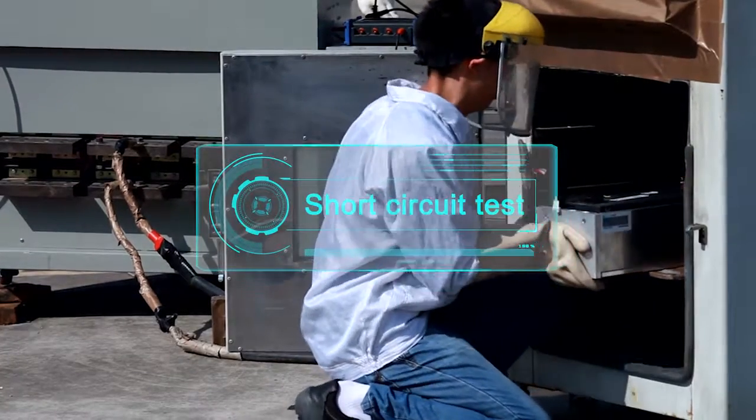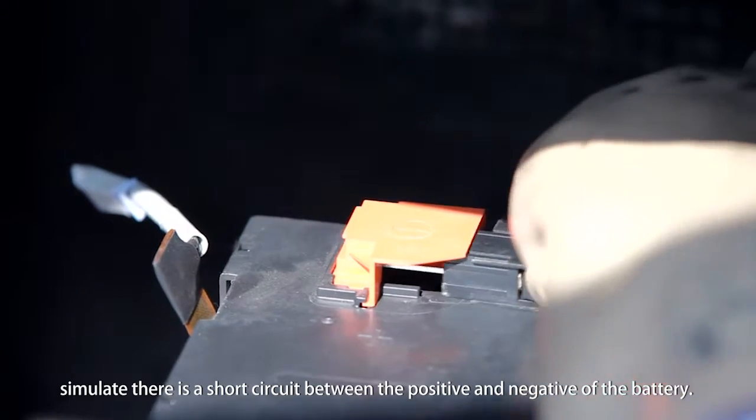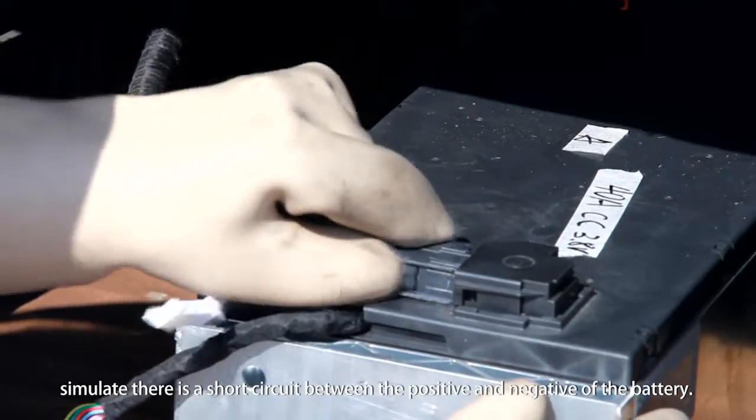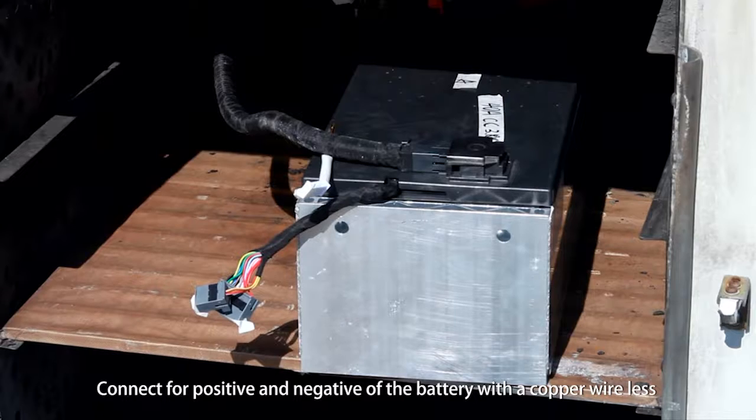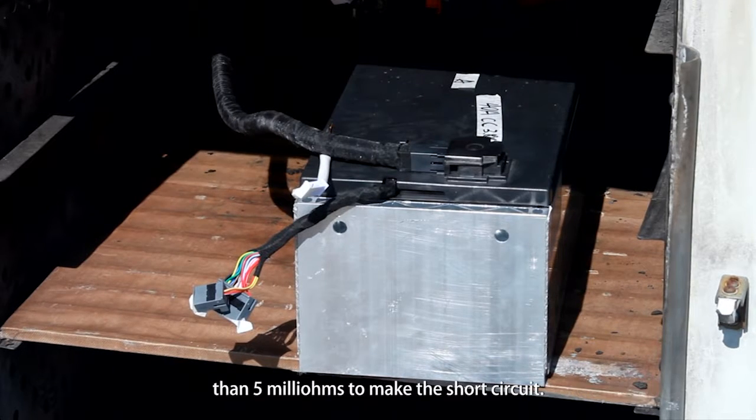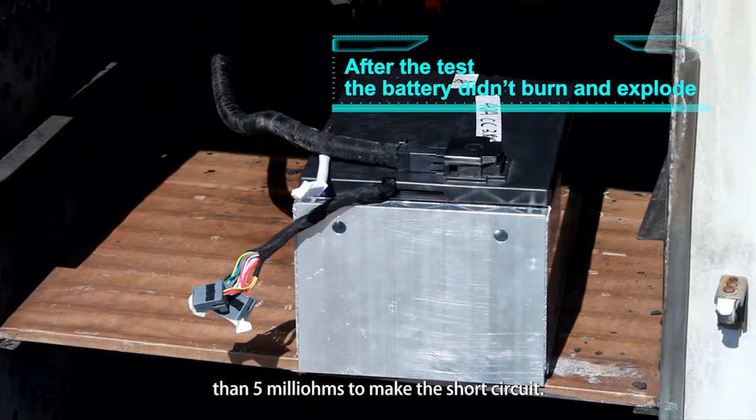Short circuit test. Simulate there is a short circuit between the positive and negative of the battery. Connect the positive and negative of the battery with a copper wire less than 5 milliohms to make the short circuit.